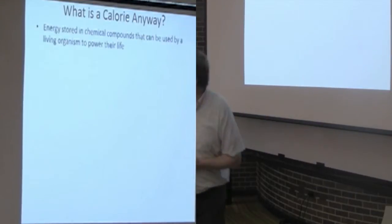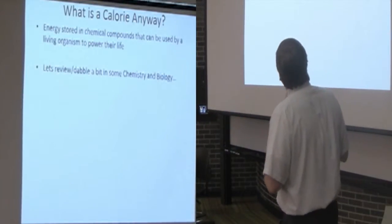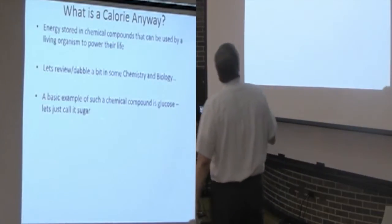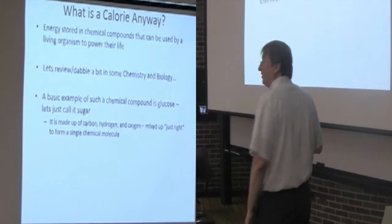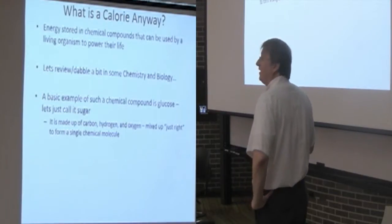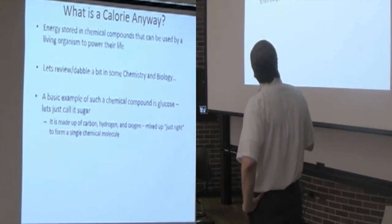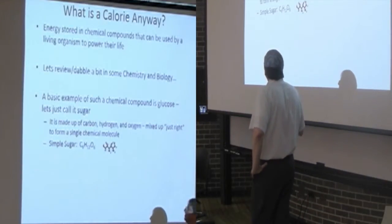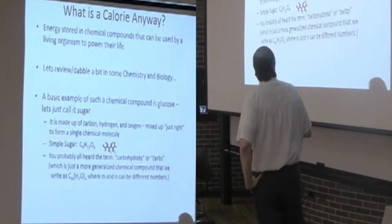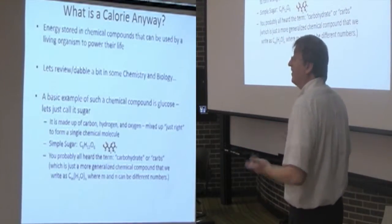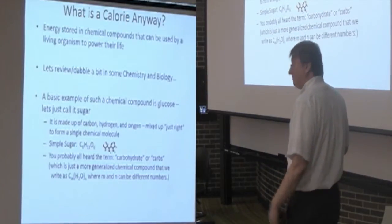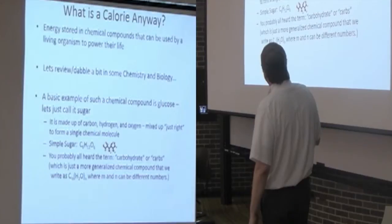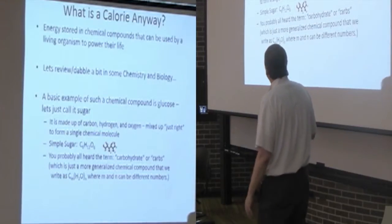All right. So, what is the calorie anyway? Well, let's remind ourselves a little bit. Let's do a tiny bit of chemistry here. It is energy stored in the chemistry, the chemical compounds that we eat. Let's do the simplest one. All right. Sugar. Glucose. And, if you happen to remember this, if not, well, this is the reminder. It's got three other little elements in it. Carbon, hydrogen, and oxygen. They're mixed up just right. They form a single chemical molecule. Here's the simplest one. Sugar. Six carbons, 12 hydrogens, six oxygens. And, you've probably all heard the term carbohydrates or carbs. All right. That's where it comes from. Carbohydrates. Carbon. All right. Hydrates for water, for something to be hydrated. And, it's just a more generalized chemical compound, right? We often write as different numbers of carbons and the hydrogen and the water molecules combined.